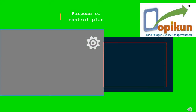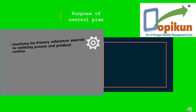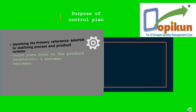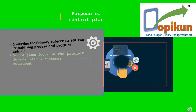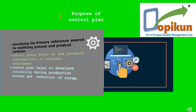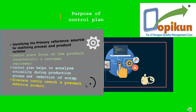Purpose of control plan: Point one, control plan helps in identifying the primary reference source for stabilizing process and product variation. Point two, control plans focus on the product characteristic and customer requirement. Point three, control plan helps to analyze criticality during production process and reduction of scrap. Point four, eliminate costly rework and prevent defective product.